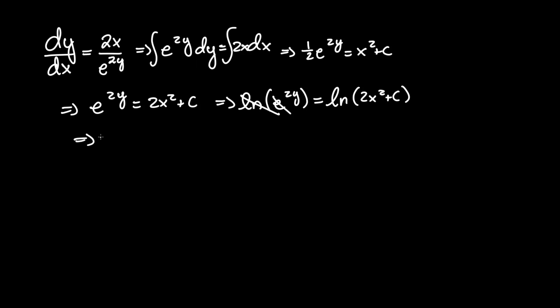So now we have 2y equals ln of 2x squared plus c. Dividing by 2, we have our final answer of y equals 1 half ln of 2x squared plus c.